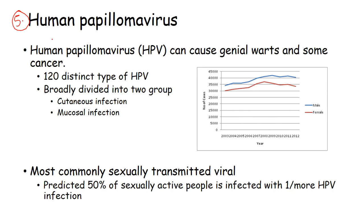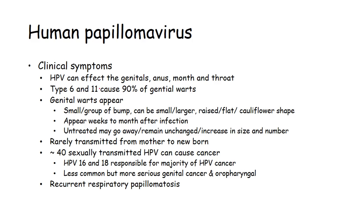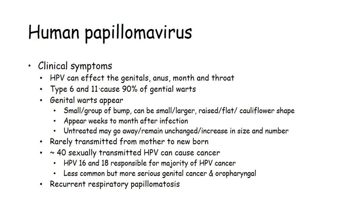The fifth type of STD is human papillomavirus (HPV). HPV can cause genital warts and some cancers, and is more predominant in males. 120 distinct types of HPV are identified, broadly divided into cutaneous infection and mucosal infection. HPV is the most commonly sexually transmitted viral disease, predicted to infect 50% of sexually active people with at least one HPV infection. Type 6 and 11 cause 90% of genital warts.